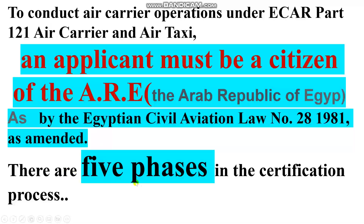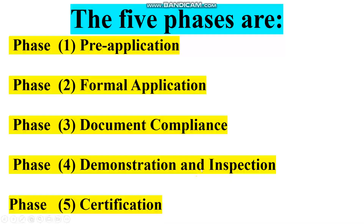There are five phases in the certification process. Number one: pre-application. Number two: formal application. Number three: document application compliance. Number four: demonstration and inspection. Number five: the certification.